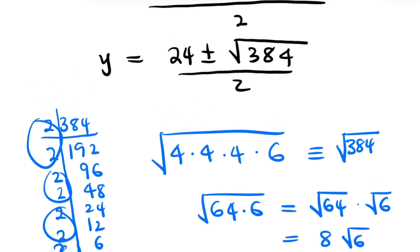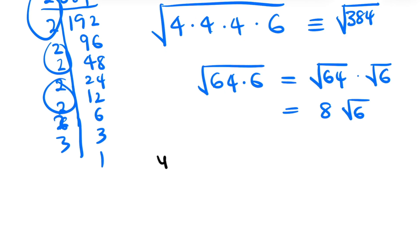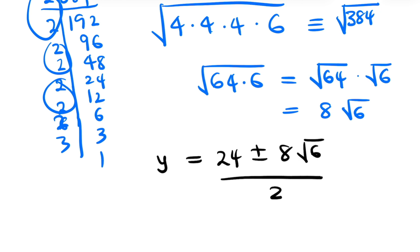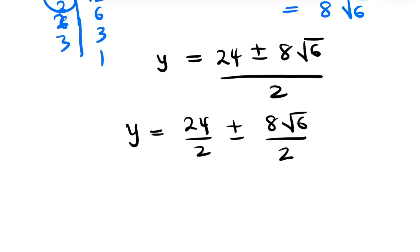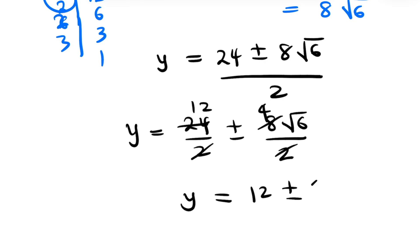Therefore all of this is now 8 root 6. So y equals 24 plus or minus 8 root 6, all over 2. Separating: 24 over 2 is 12, and 8 root 6 over 2 is 4 root 6. Therefore y equals 12 plus or minus 4 root 6, and this is the final answer for y.